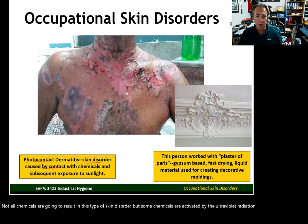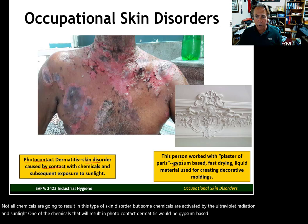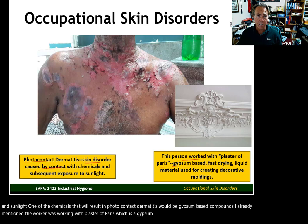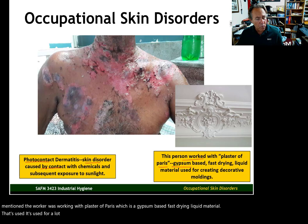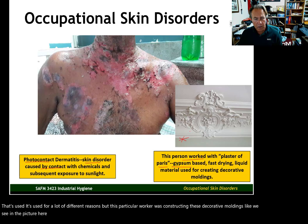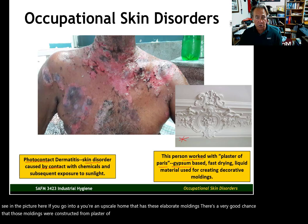One of the chemicals that will result in photocontact dermatitis would be gypsum-based compounds. The worker was working with Plaster of Paris, which is a gypsum-based, fast-drying liquid material used for a lot of different reasons. This particular worker was constructing decorative moldings, like we see in the picture here. If you go into an upscale home that has elaborate moldings, there's a very good chance those moldings were constructed from Plaster of Paris, which is gypsum-based.